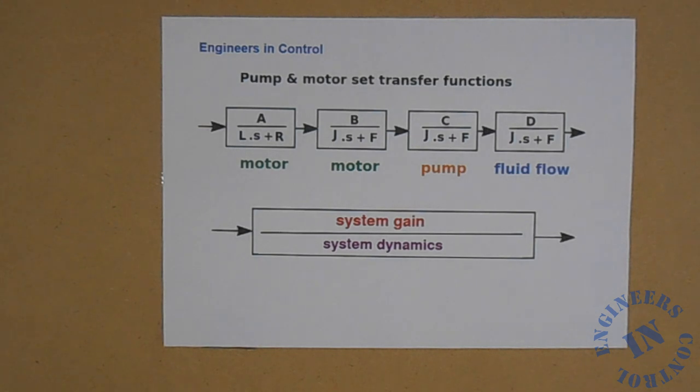When we have a single transfer function, the numerator and the denominator represent two entirely different aspects. In this case the numerator is the simple conversion of the input to the output by a simple gain function. It can also contain functions of s and then we call it the output equation. We will deal with that several talks on, but for now it is just the system gain. The denominator is the equation that defines the system dynamics. In a future talk we will call this the characteristic equation or characteristic polynomial.